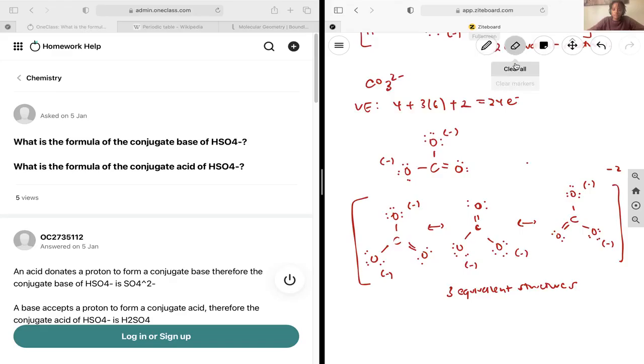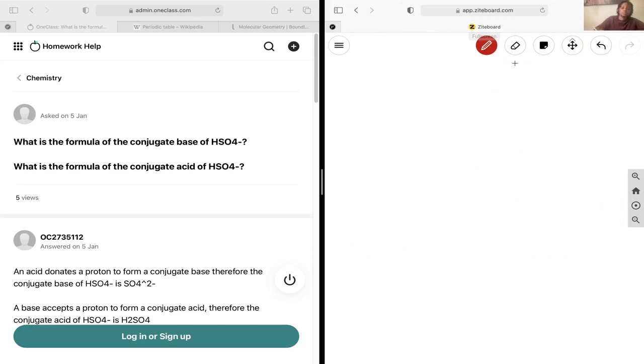Next up we're looking at conjugate acids and bases. We need to remember that according to Bronsted-Lowry acid-base theory, we have acids as proton donors and bases as proton acceptors.